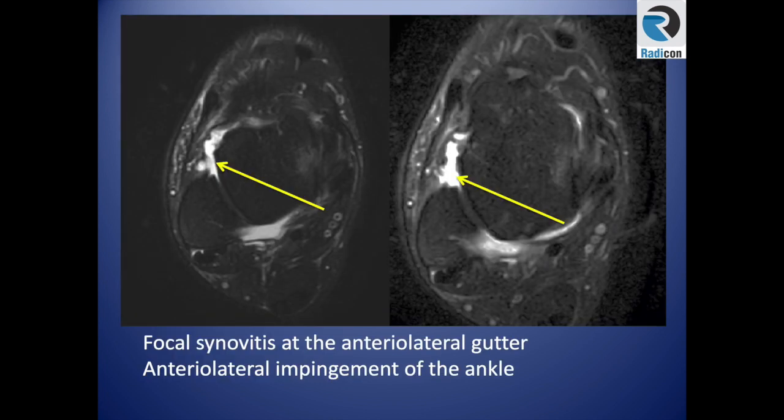Here is an example of a patient who had a chronic injury presenting with recurrent pain and instability. On MRI, there is synovitis with focal fluid collecting at the anterior lateral gutter, with evidence of a very attenuated anterior talofibular ligament and some scarring tissue, which typically indicates anterior lateral impingement.